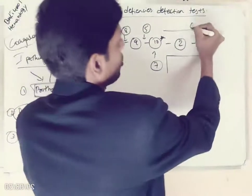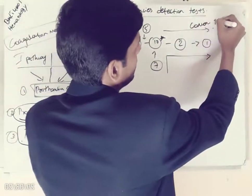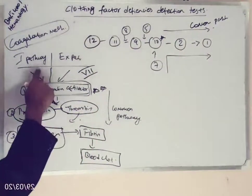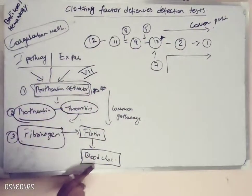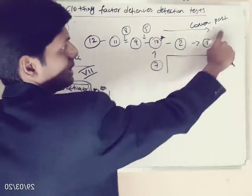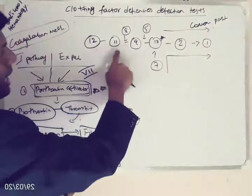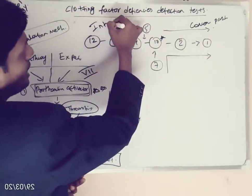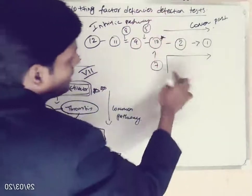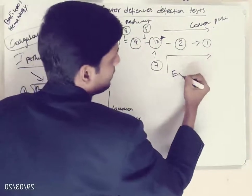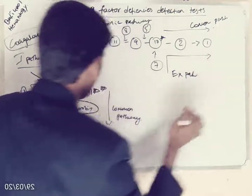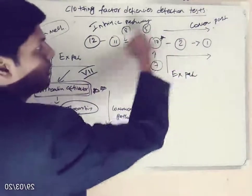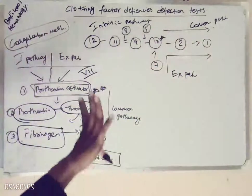Factors 10, 2, and 1 indicate the common pathway. So in coagulation mechanism we have three pathways: intrinsic pathway, extrinsic pathway, and from prothrombin to blood clot is the common pathway. Factors 12, 11, 8, 9, 5, and 10 are involved in the intrinsic pathway, while factors 7, 10, 2, and 1 are involved in the extrinsic pathway. If you memorize this table, you can understand the coagulation mechanism very easily.